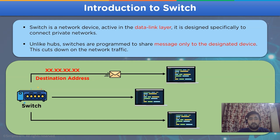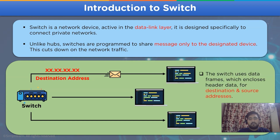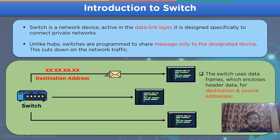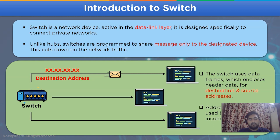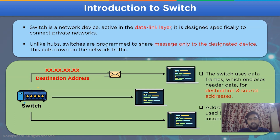This cuts down the network traffic in the channel. Switches use different types of data, which can be either packets or data frames. A switch uses a source address and the destination address for forwarding the message to the specific device in the system.